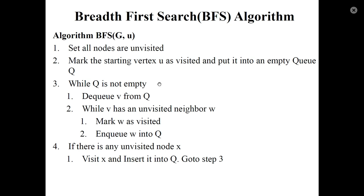The loop condition is Q is not empty. Dequeue a node from Q. If it has unvisited neighbors, mark them as visited and enqueue them into Q. This process continues.